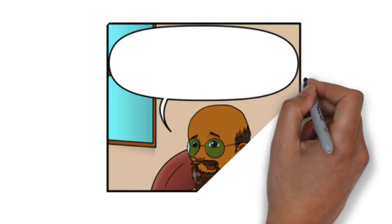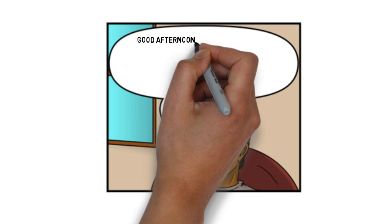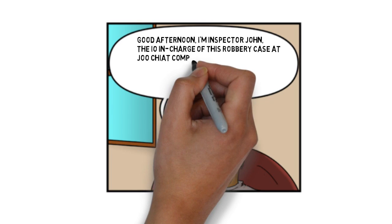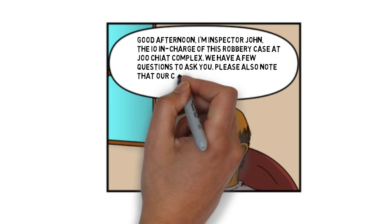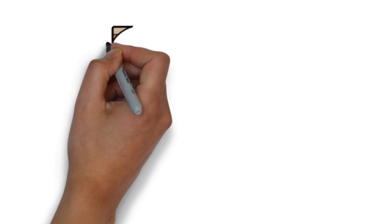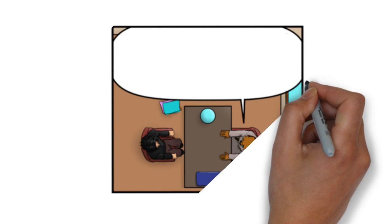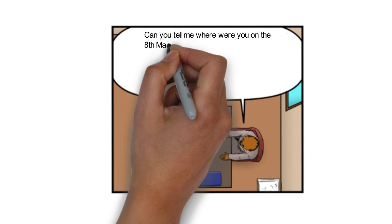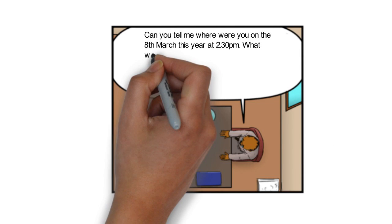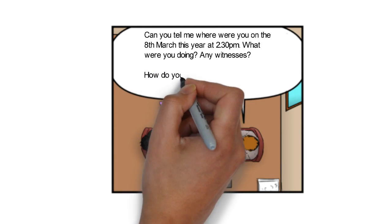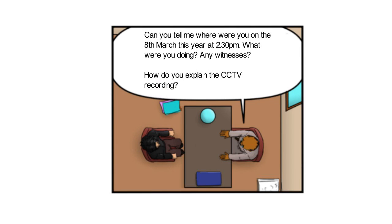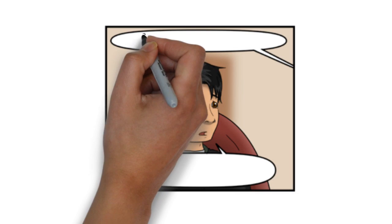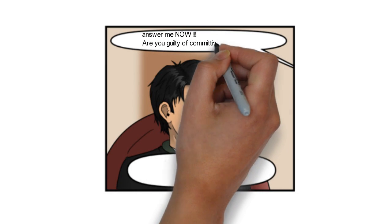Here is a scenario where the Fourier parameters can be used. Good afternoon. I am Inspector John, the I.O. in charge of this robbery case at Jucheck Complex. We have a few questions to ask you. Please also note that our conversations are recorded. Can you tell me where were you on the 8th of March this year at 2:30pm? What were you doing? Any witnesses? How do you explain the CCTV recording? Answer me now! Are you guilty of committing the robbery?